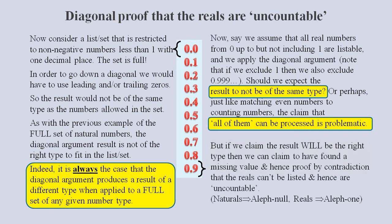But if we claim the result will be of the right type, then we can claim to have found a missing value. And hence, proof by contradiction that real numbers can't be listed. Then we can convince ourselves that we can conceive of infinities of different sizes. And we can give them different names such as aleph null and aleph one. Mathematicians want infinite decimals to be valid, and so they'll reject any argument against the answer they want to be true. And the answer they want to be true is that we can prove that real numbers can't be listed.